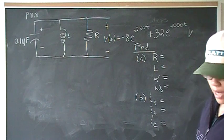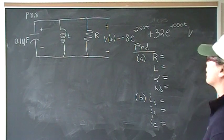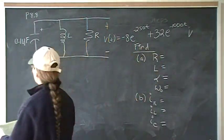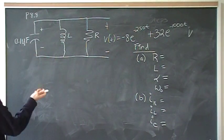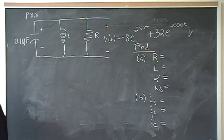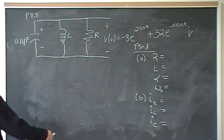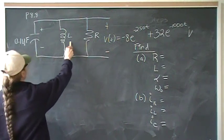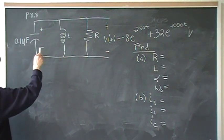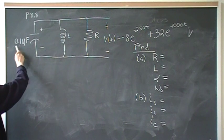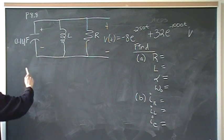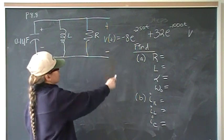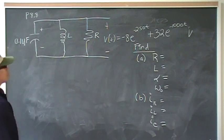This is problem eight of chapter eight. The circuit we have is a parallel RLC circuit. We don't know the value of R, L, or the current. We do have the capacitance. We don't have any initial voltages — actually, we do have the initial voltage.